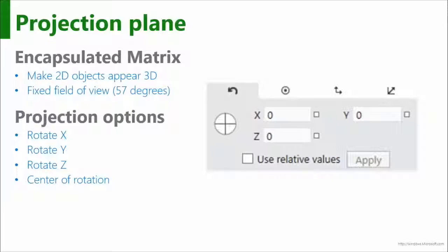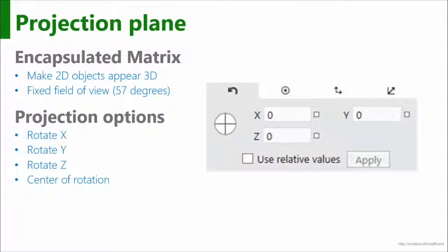Another piece already in our toolbox is not only render transforms but projection transforms as well. We have the projection plane, which is a wrapper of the matrix transform. This is where you do all the math and lay it out exactly the way you want, and you can create an almost 3D effect on an object. The projection plane has done a lot of the math on your behalf, giving you X, Y, and Z to manipulate. This is still 2D — we are not in a 3D world at all. The projection plane has a fixed field of view of 57 degrees.